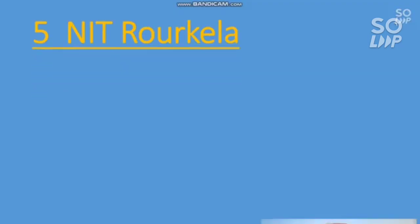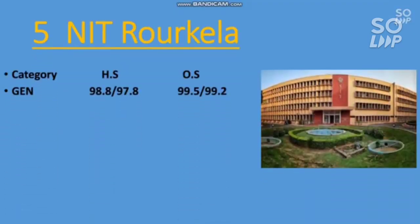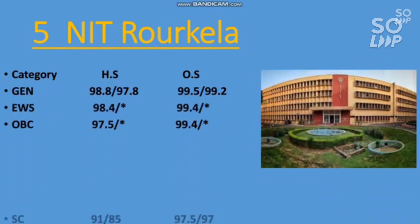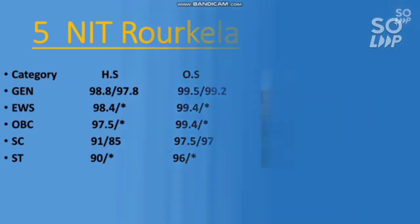Number five is NIT Rourkela. EC cutoffs: General 99.5 percentile, EWS 99.4, OBC 99.4, SC 97.5, and ST 96 percentile — that is the minimum percentile you need to score to get the EC branch.